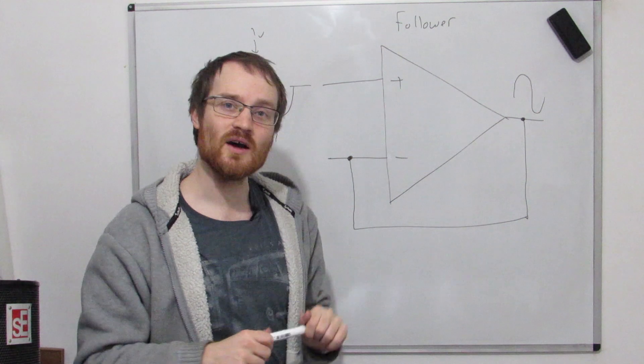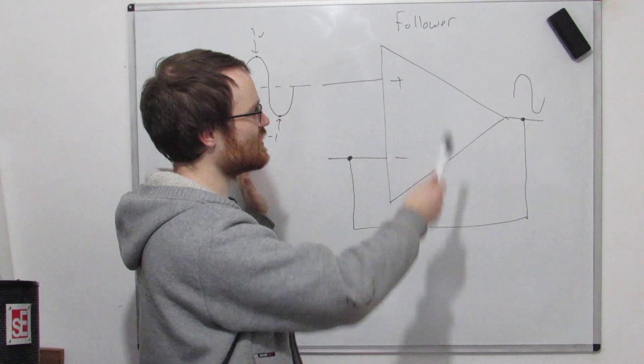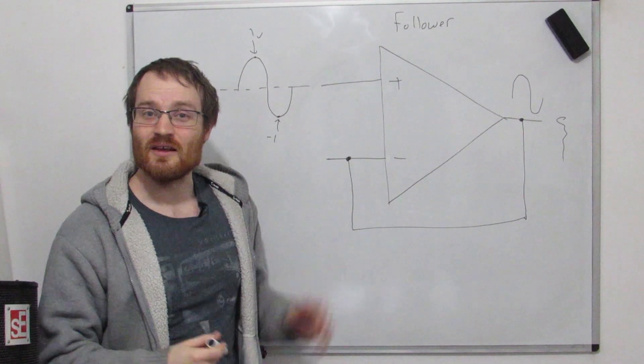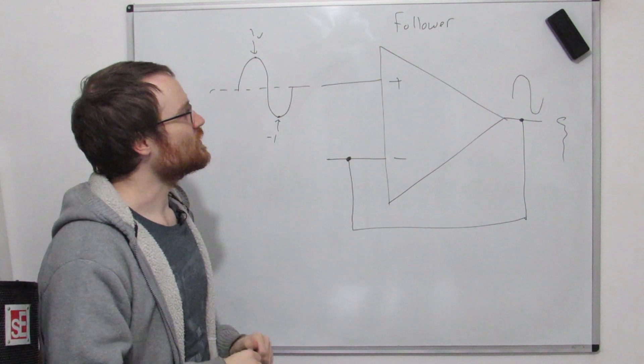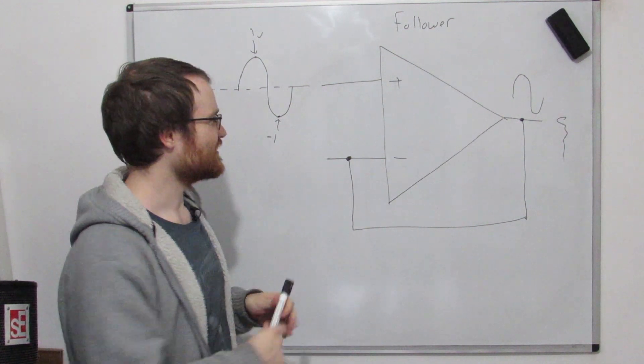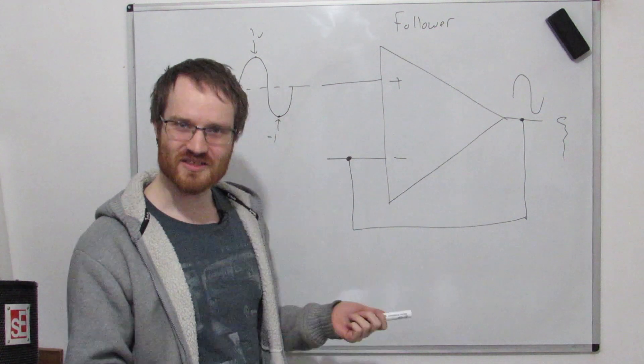So this is called a follower, and this is essentially what we can think of as a buffer. Okay, so that's all well and good. I'm sure you can see how that's useful, but it doesn't really do anything. You just get the output is the same as the input. How do we get op-amp circuits that do stuff?